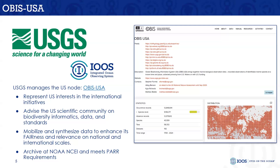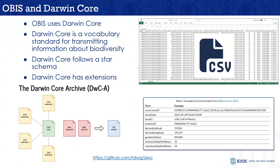OBIS and GBIF are built on the Darwin Core standard — it's just a CSV file, really not that scary. It's a standardized vocabulary that says if you have latitude and longitude, put it in this column and call the header this specific thing. It's not a really complex format; it's just bringing data into a standardized file using a common vocabulary. It follows a star schema, where there's a core occurrence and then all these other potential measurements that could have gone into that occurrence, like environmental observations, or in this case the eDNA and the methods that went into that eDNA observation.